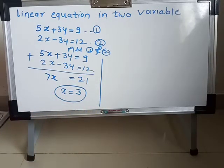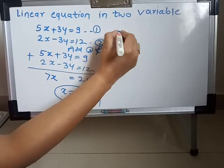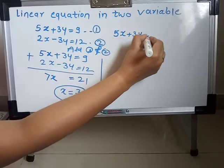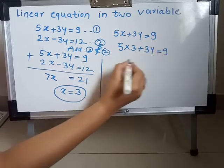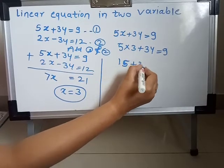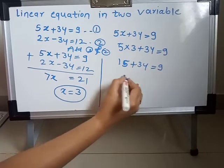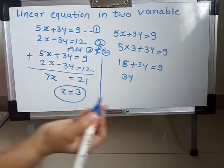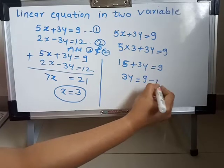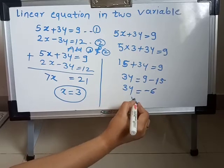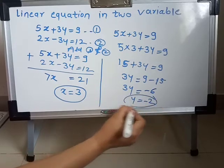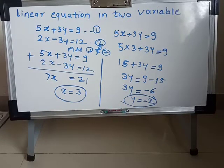To find Y, put the value X equal to 3 into equation first: 5X plus 3Y is equal to 9. So 5 into 3 plus 3Y is equal to 9, giving 15 plus 3Y equals 9. Bringing 15 to the right side: 3Y is equal to 9 minus 15, which is minus 6. Therefore Y is equal to minus 2.